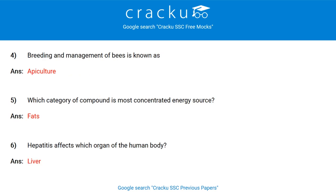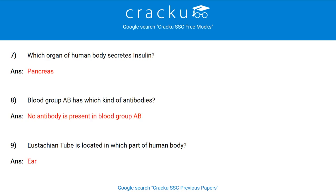Breeding and management of bees is known as Apiculture. Which category of compound is the most concentrated energy source? Fat. Hepatitis affects which organ of the human body? Liver. Which organ of the human body secretes insulin? Pancreas.